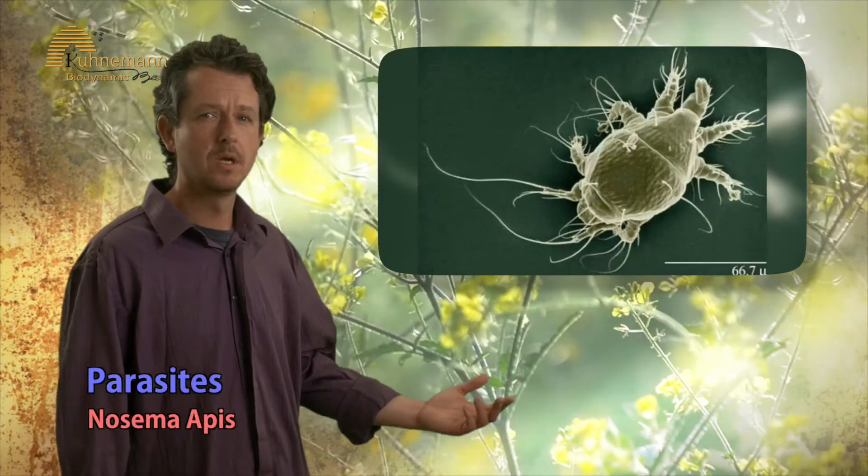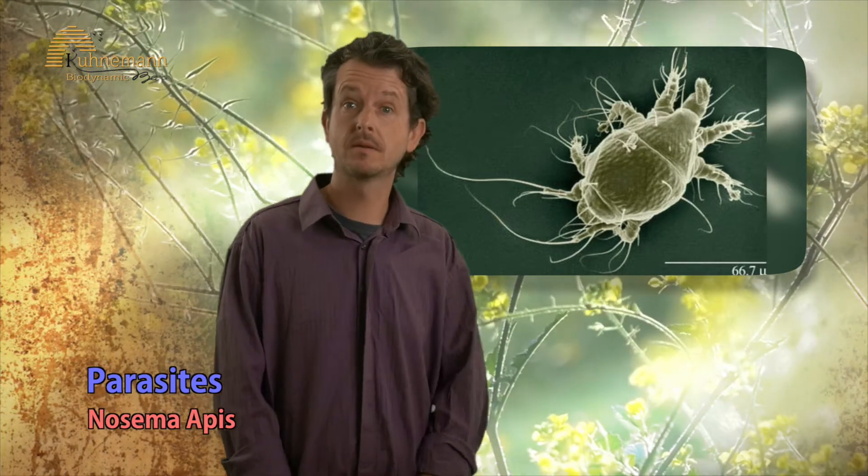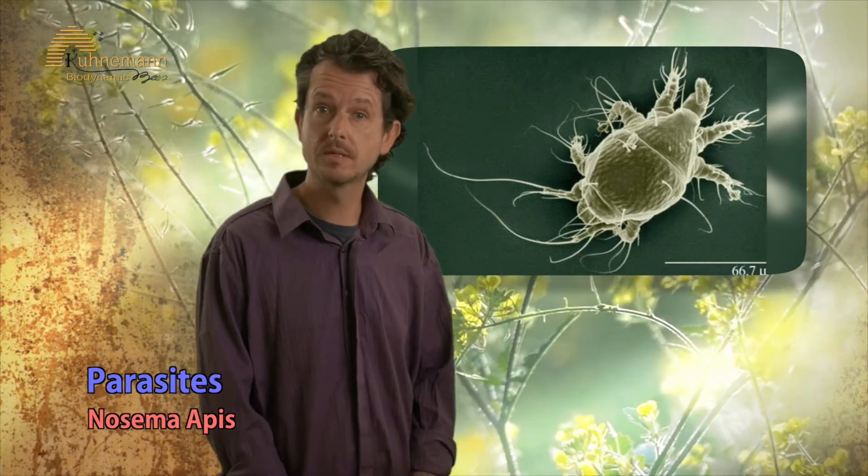Parasites. Nosema Apis is a parasite that attacks the intestines of adult bees under stress. Normally this kind of stress occurs when bees are forced to stay in the hive for more than 24 hours continuously while transporting hives, bad nutrition or bad weather. To identify this parasite it is necessary to call your local bee inspector to collect some bees for laboratory tests. Treatment: avoid feeding your bees sugar syrup and don't force the bees to remain in the hive.